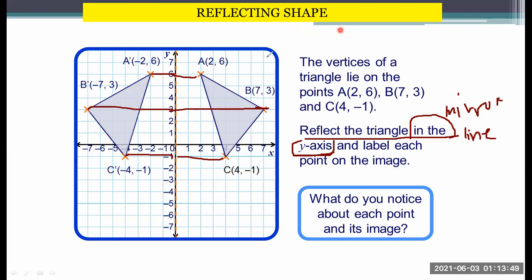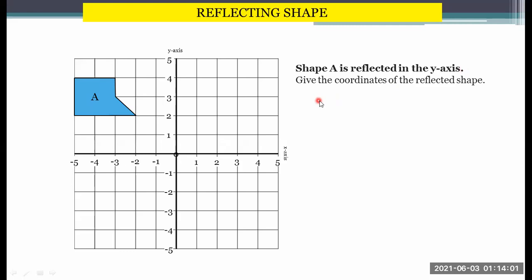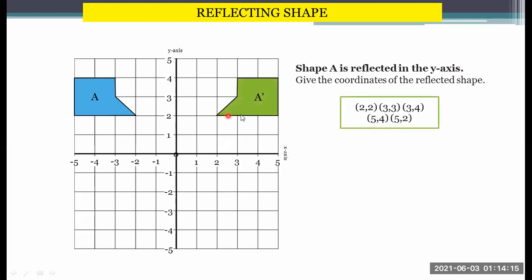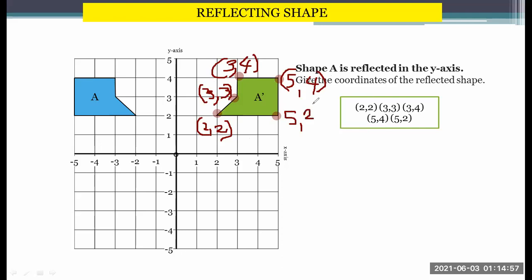Shape A is reflected in the y-axis. Give the coordinates of the reflected shape. The y-axis is this vertical line, so we are going to reflect it on the opposite side. Let's mark the coordinates. Here we have (2, 2), here (3, 3), this point is (3, 4), and at this point we have (5, 4), and here we have (5, 2). So these are the coordinates of the points.